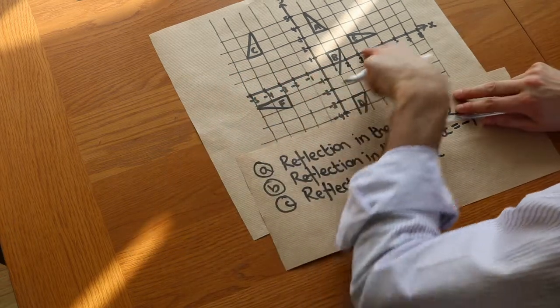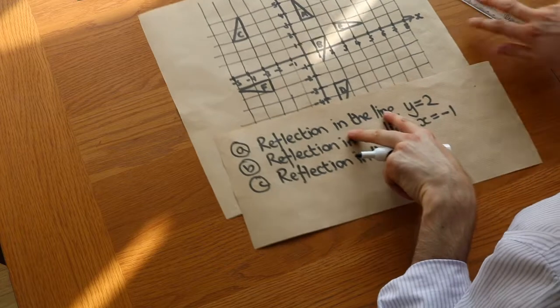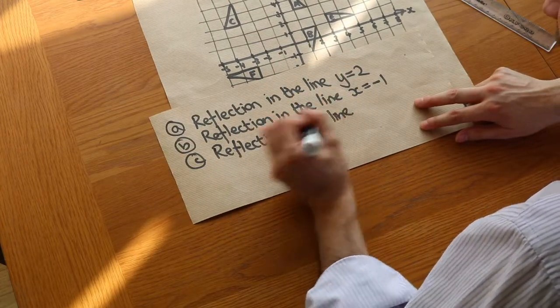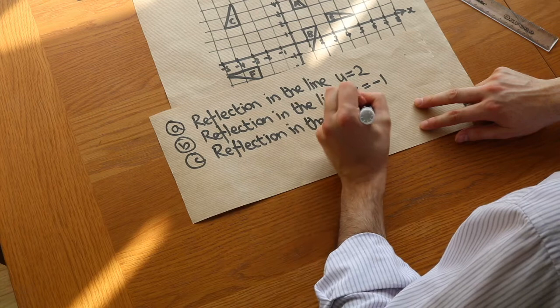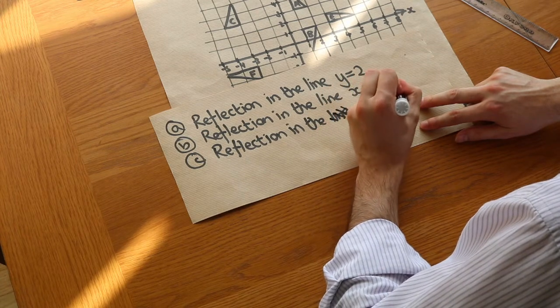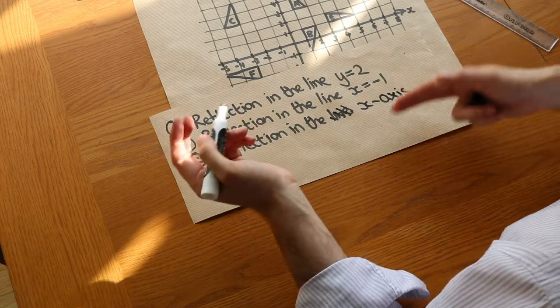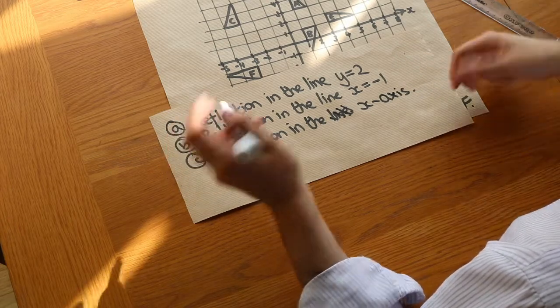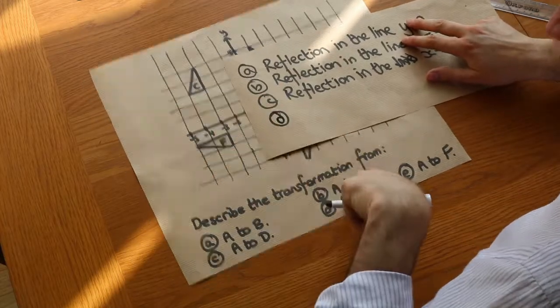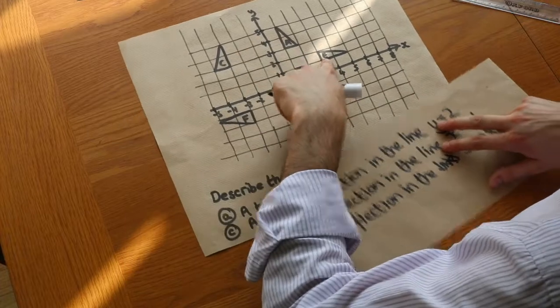Or notice that this line here is the X axis. So it's completely fine to write it's a reflection in the X axis. And we're allowed to write that. That's totally fine. Or you could use in the line Y equals 0. That's also acceptable. And the next one, we've got A to E.